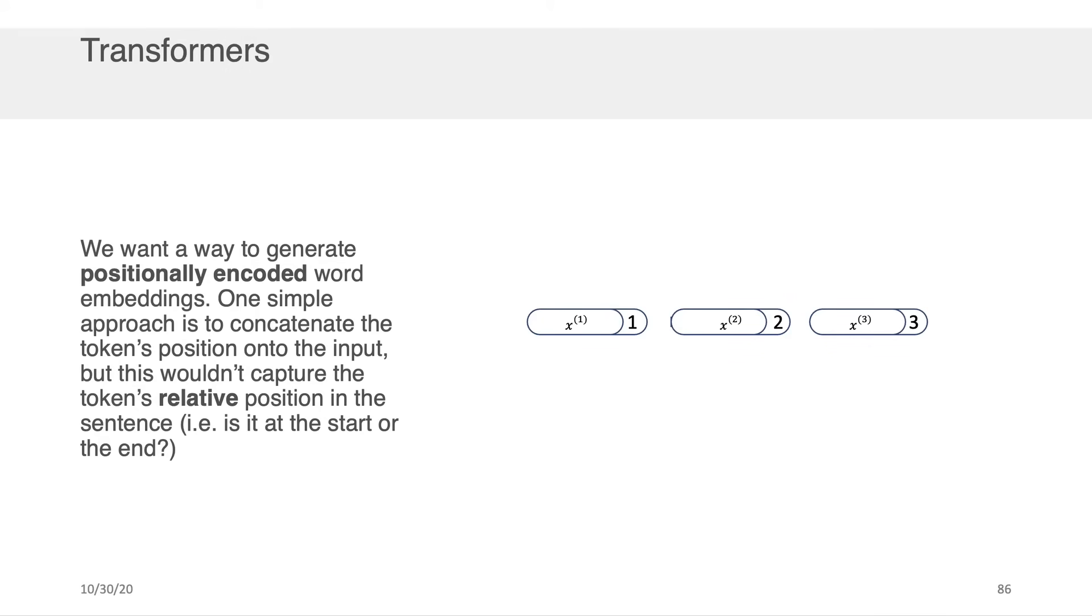Now the simplest way that you could attack this is to simply concatenate each of the tokens positions onto the input. So I could say for example, whatever the word embedding value of x1 is, I'm just going to add another dimension to this and that dimension is going to have one because this is the first token in the sequence. And then for x2 I'm going to concatenate two, x3 I'm going to concatenate three, and so on.